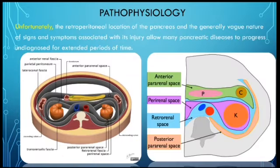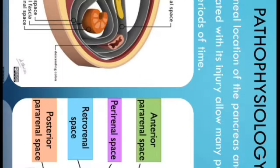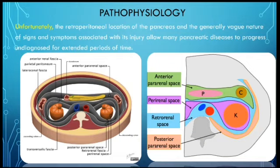Regarding pathophysiology, chronic pancreatitis may go undiagnosed due to two factors. First, the retroperitoneal location of the pancreas — which lies anterior to the posterior abdominal wall and posterior to the parietal layer of the peritoneum, suspended by the mesentery — makes it difficult to detect.